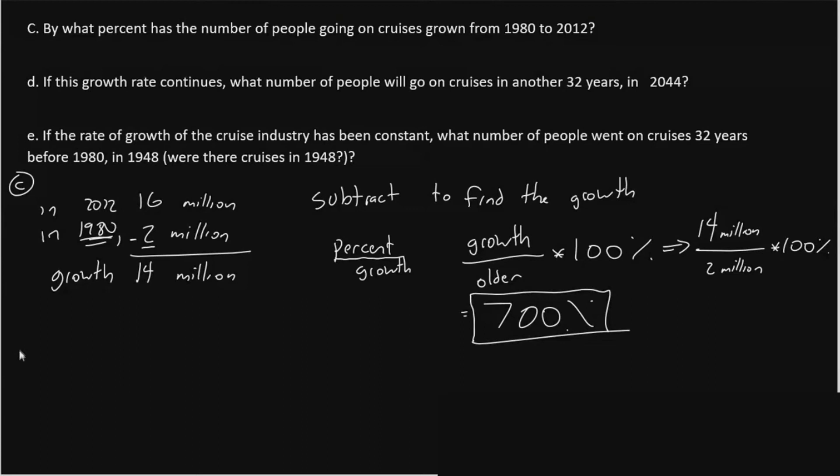So for part D, what number of people will go on cruises in another 32 years in 2044? So we've got our 700. In part D, we need to use this equation. We'll say the new value that's in 2044 is equal to the old value that is from 2012 times 1 plus the percentage over 100. So the P I've written here is the growth percent. This comes from part C.